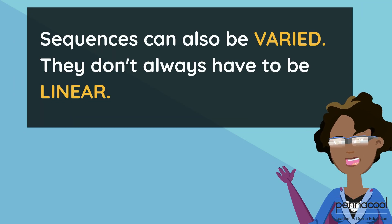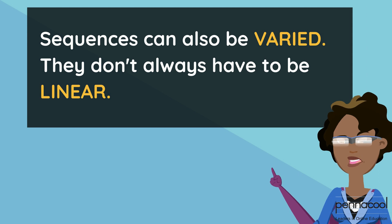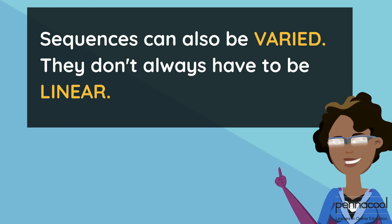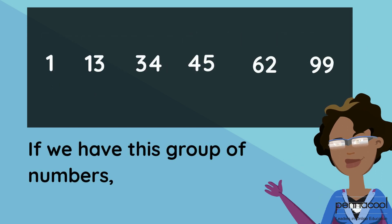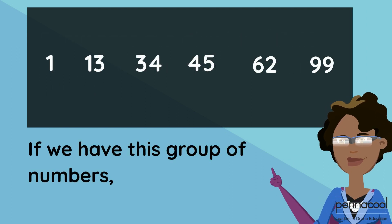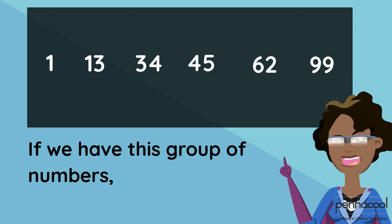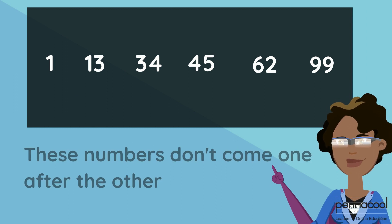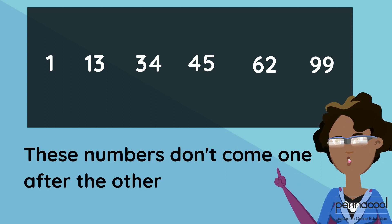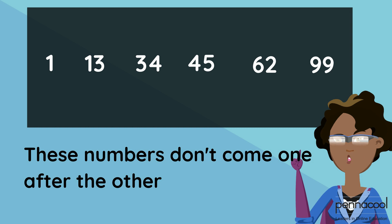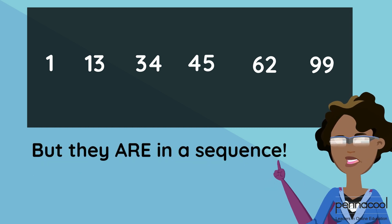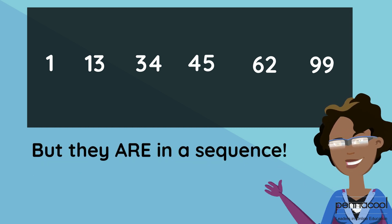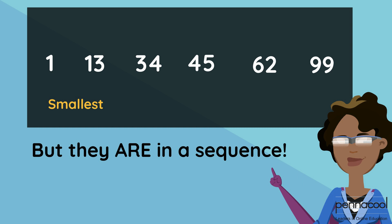Sequences can also be varied and they don't always have to be linear. If we have this group of numbers — 1, 13, 34, 45, 62, and 99 — these numbers don't come one after the other but they are in a sequence. The sequence that they are in is smallest to largest.